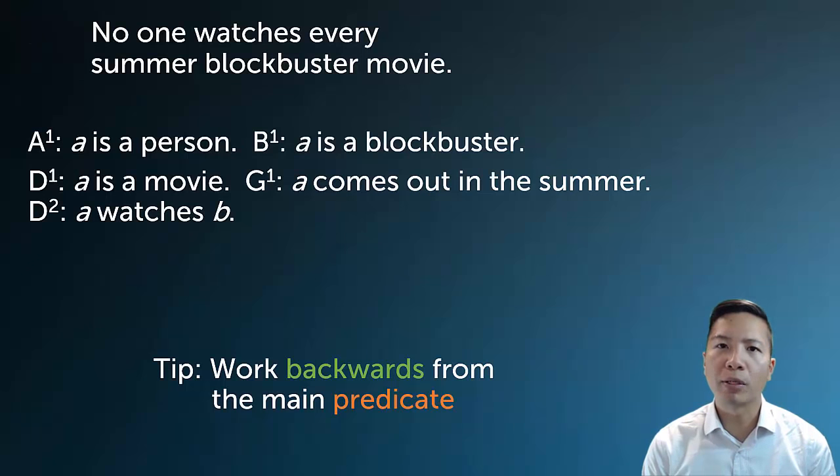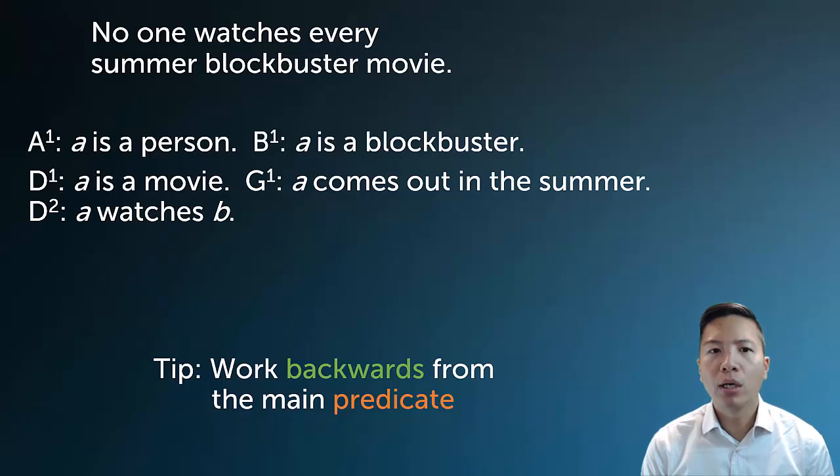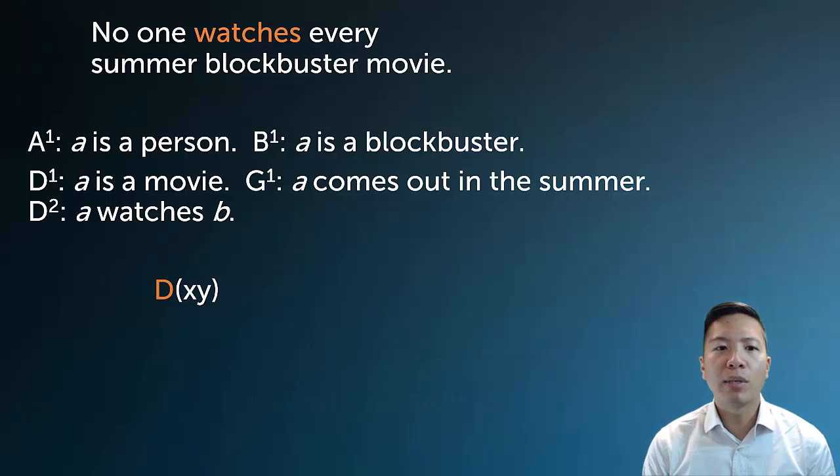So let's take a look at a more complicated example. No one watches every summer blockbuster movie. Now I'm not going to symbolize this directly. What I mean is I'm not just going to symbolize this left to right. What I'm going to demonstrate in this example is how to use a technique where we work backwards from the main predicate. Now what's the main predicate? You can think of it as actually the main thing that we're really trying to say in the sentence, the main important relation. And here, it's actually the relation of watching. We're really trying to convey some information about someone watching something else. So when we look at the main predicate, it's going to be D, A watches B. Now what I'm going to do is I'm just going to specify arbitrarily that the letters that I want to appear in D are going to be X and Y, because it really doesn't matter. The choice of variable letter is totally random, so you can pick whatever you want. So I'm going to say D will look like XY.